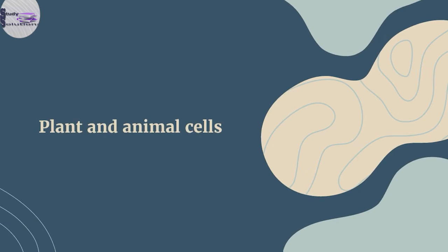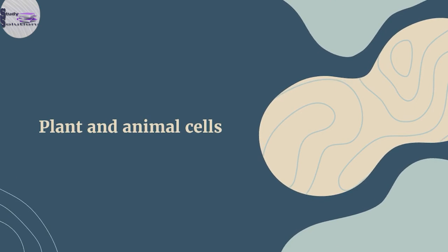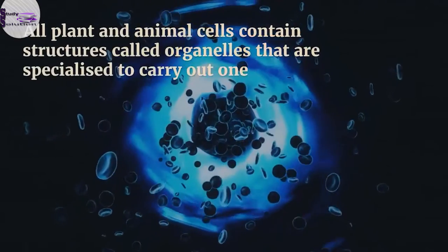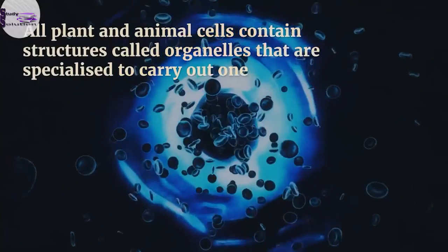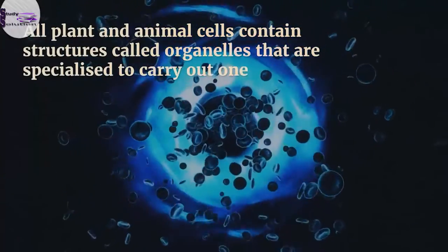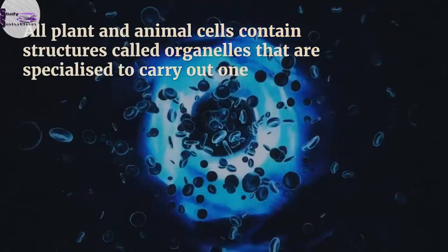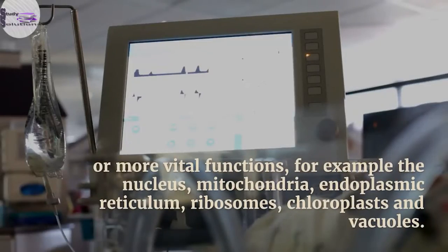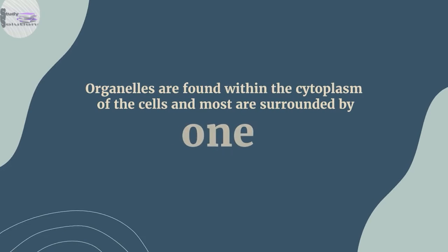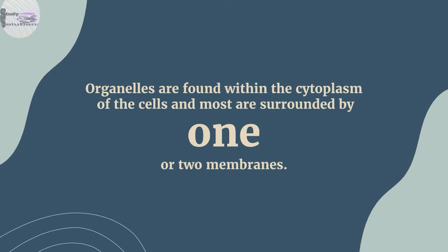Plant and animal cells. All plant and animal cells contain structures called organelles that are specialized to carry out one or more vital functions, for example the nucleus, mitochondria, endoplasmic reticulum, ribosomes, chloroplasts and vacuoles. Organelles are found within the cytoplasm of the cells and most are surrounded by one or two membranes. The following structures are found in all plant and animal cells.